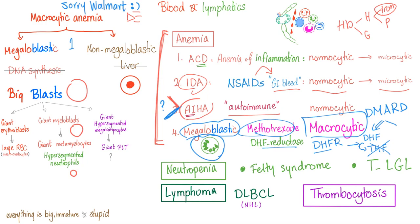Which cell lines are affected? Red blood cells, white blood cells, and platelets — all of them, because all cell lines require cell division and DNA replication. So you have big blasts — that's why we call it megaloblastic anemia. Such as giant erythroblasts, giant myeloblasts, giant megakaryocytes. They give birth to large red blood cells called macro-ovalocytes, big fat cells, giant metamyelocytes, including large hypersegmented neutrophils. Eosinophils and basophils are affected the same way, but neutrophils constitute about two-thirds of your white blood cell count, so they're easy to find.